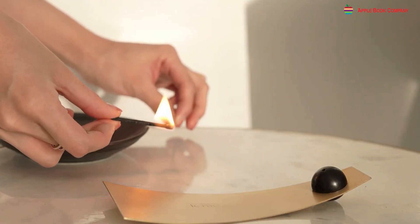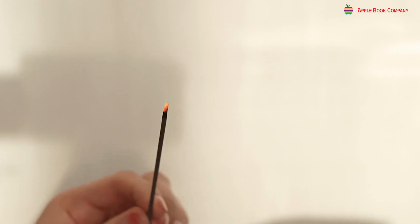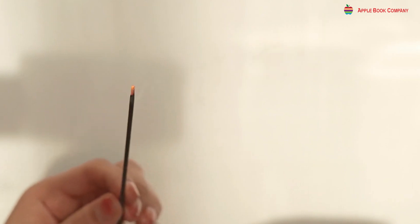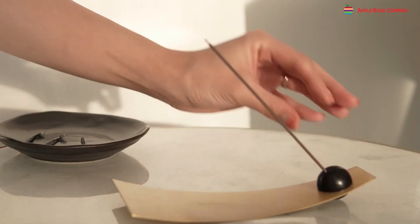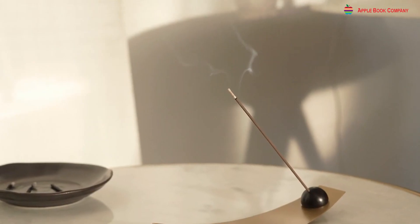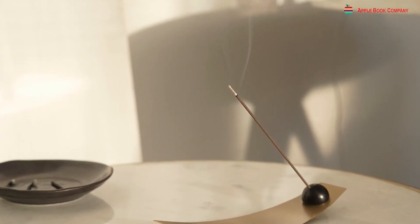Task 4. Light an incense stick in one corner of your room. After some time, it can be smelt in other corners of the room too. The stick releases scented smoke on burning, and the molecules of smoke soon fill the entire room.